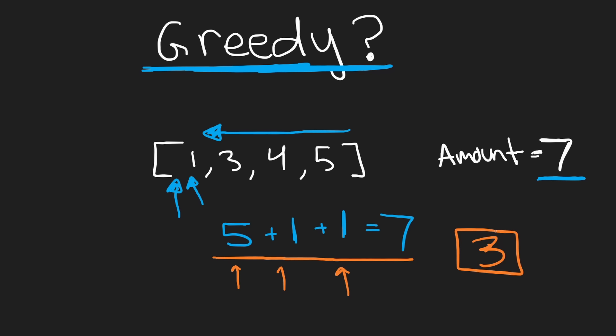But is three the minimum amount of coins? The answer is no — we have a three and a four, and three plus four is seven, meaning the minimum is actually two coins. So this is a counterexample: we cannot be greedy if we want to solve this problem correctly.